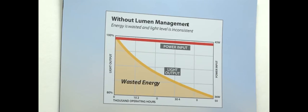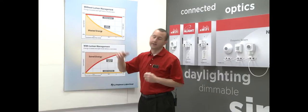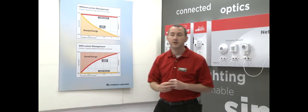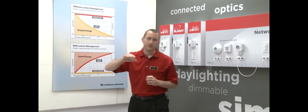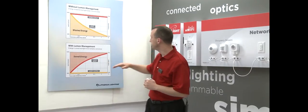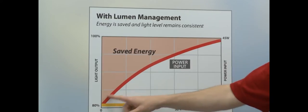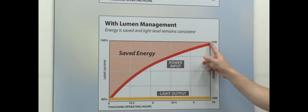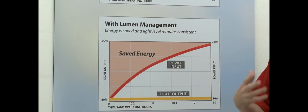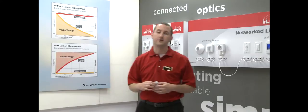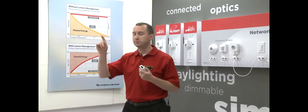What the NEO device does is it keeps track of the number of hours that a fixture is running. It also knows the depreciation curve of those LEDs. So over time, as the number of operating hours increases, it will slowly step up from 80% day one to 100% at the end of life. So day one, you're actually saving 20% energy and then reaching the actual full output of the fixture at the end of life. The light output is actually constant over the life of the fixture, which is really what the user wants.